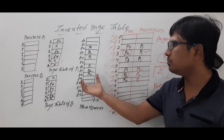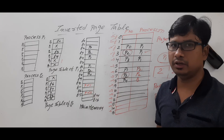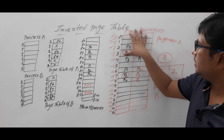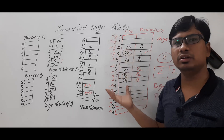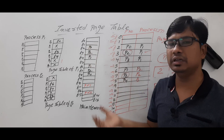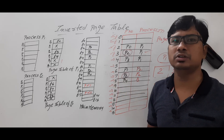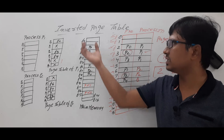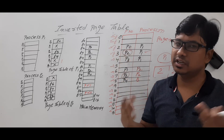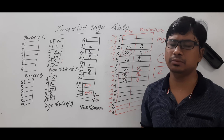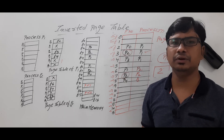The advantage of the inverted page table is that it saves main memory — in normal paging, all process page tables must be stored in frames. However, the drawback is that it takes a lot of time to determine whether a particular page is available in main memory, due to the linear search. Because of this drawback, the inverted page table concept did not become widely popular. Thank you for watching the complete video — feel free to ask any doubts in the comment section.